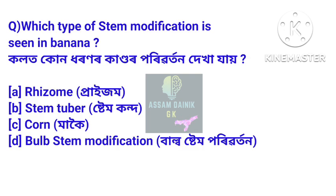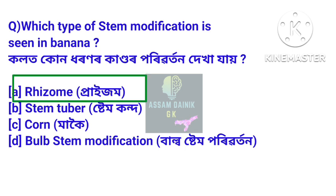Which type of stem modification is seen in banana? Kolot kundhar nar kandar puri botan dekha jai. Answer: rhizome. Kolot praizam mar puri botan dekha jai.